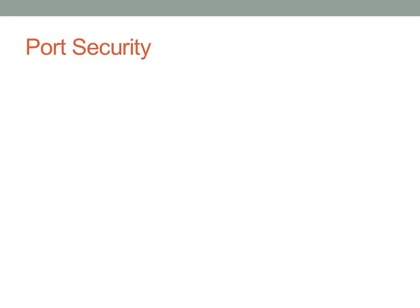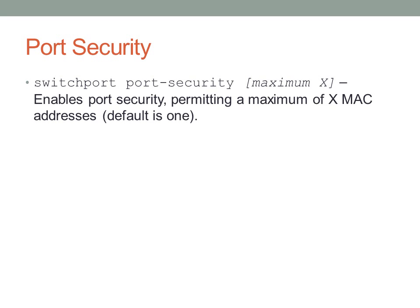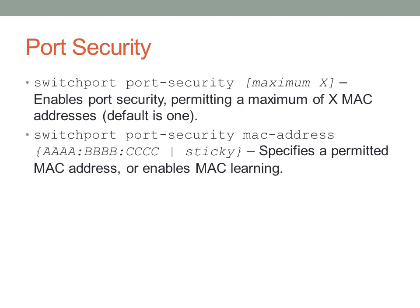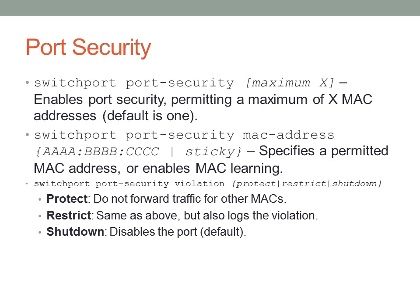Port security allows remembering individual MAC addresses on interfaces. The 'switchport port-security' command without optional parameters permits a single MAC address on a port. You can optionally specify a maximum number of MAC addresses. You can specify a particular MAC address, or use the sticky option to have the switch learn the MAC address from the first frame it receives. You can also specify what happens on a violation: 'protect' drops the frame, 'restrict' drops the frame and logs it, or 'shutdown' disables the port completely.